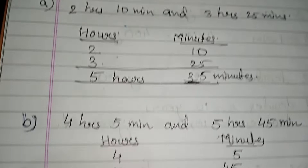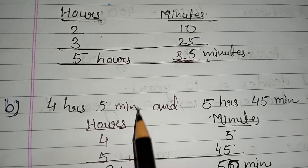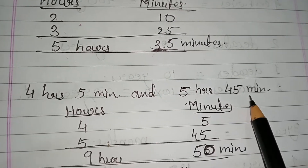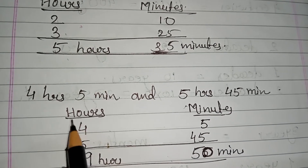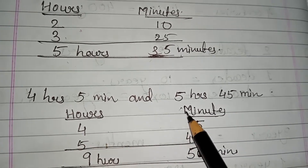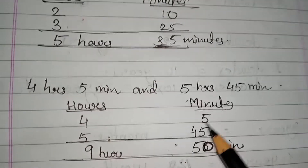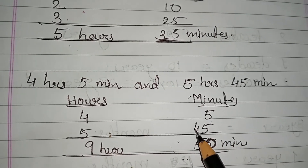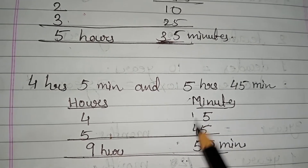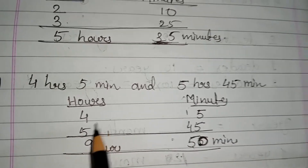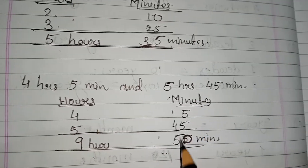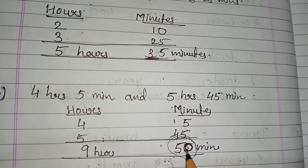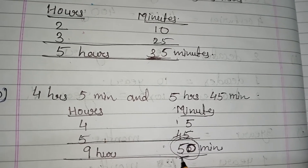Next question, question B: 4 hours 5 minutes and 5 hours 45 minutes. You have to add hours below hours and minutes below minutes. Now add minutes: 5 plus 5 is 10, write 0 and carry 1. Then 4 plus 1 is 5, and here 5 plus 4 is 9. So you have 9 hours 50 minutes — that will count in minutes.